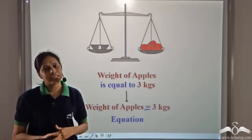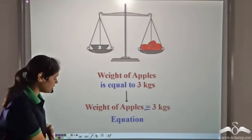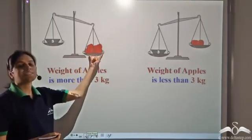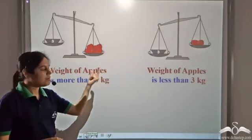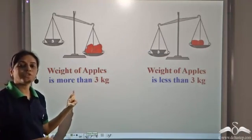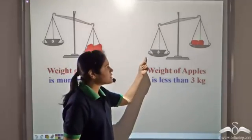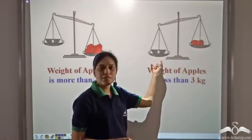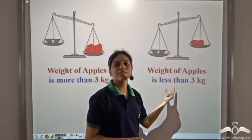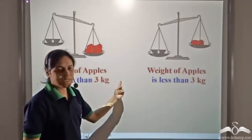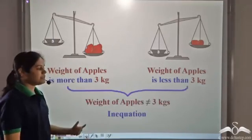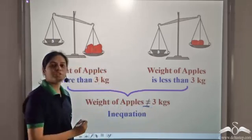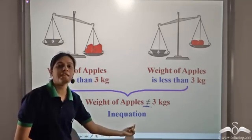But what if the things are not balanced or not equal? In one case the side containing apples is heavier, so the weight of apples is more than 3 kg. In another case, the side containing apples is lighter, so the weight of apples is less than 3 kg. In both cases, the weight of apples is not equal to 3 kg. Hence, it is an inequation.